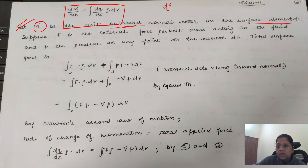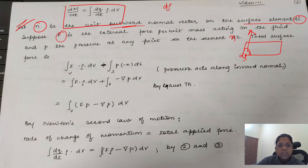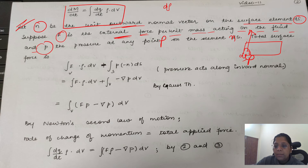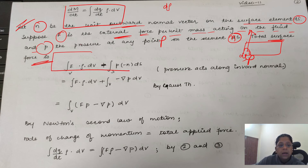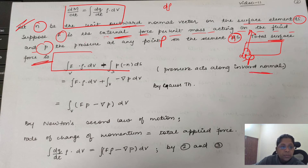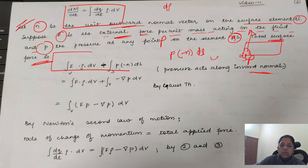Let n be the unit outward normal vector on the surface element ds. इस pipe में जो surface area ds है, उसमें एक normal force बाहर की साट को लग रहा है। Suppose F is the external force per unit mass acting on the fluid, and p the pressure at a point on the element ds. Total surface force: pressure acts inward normal, so pressure force is p·(−n)·ds.